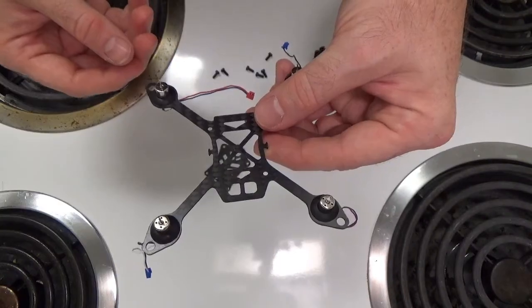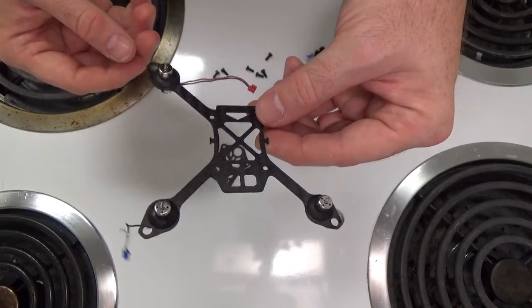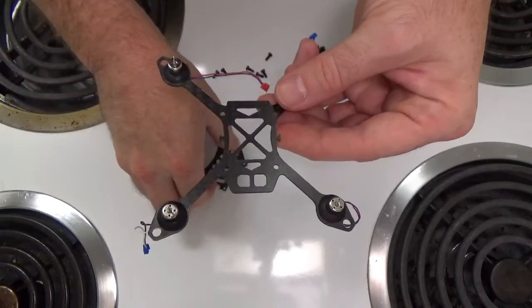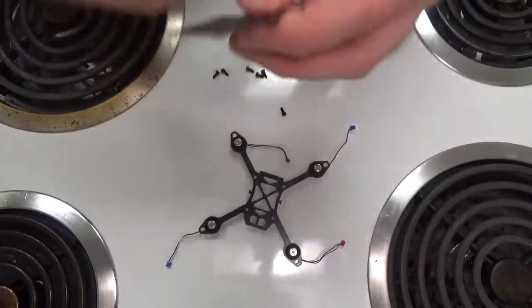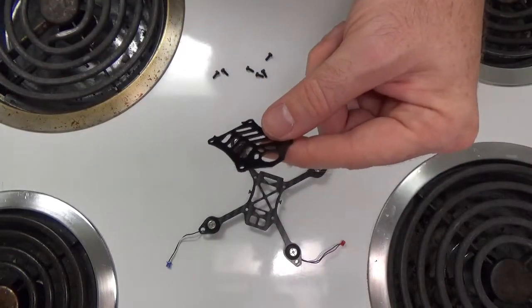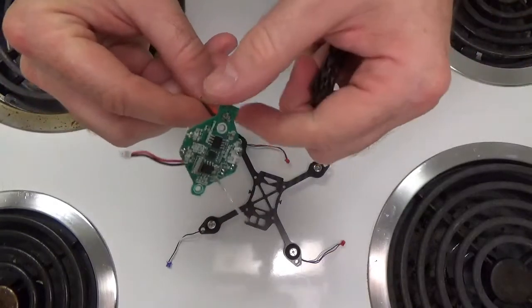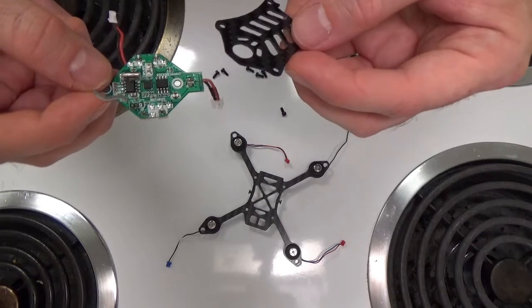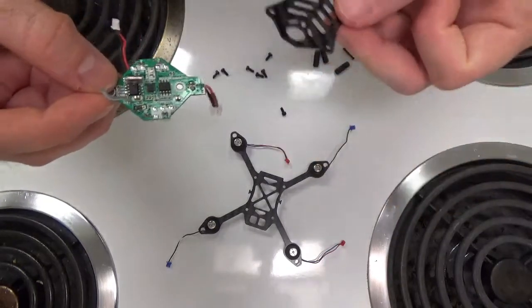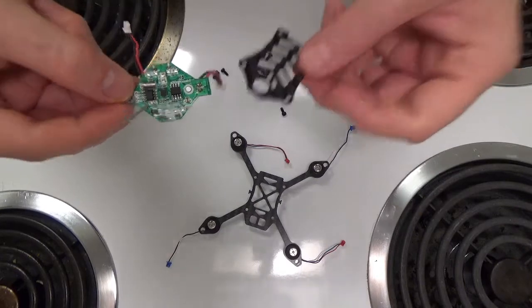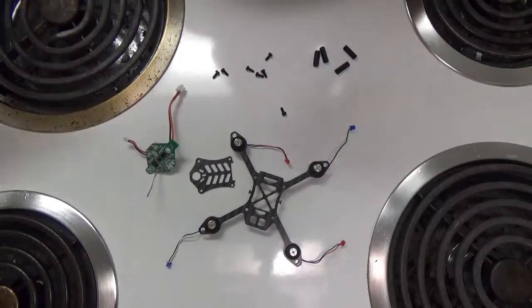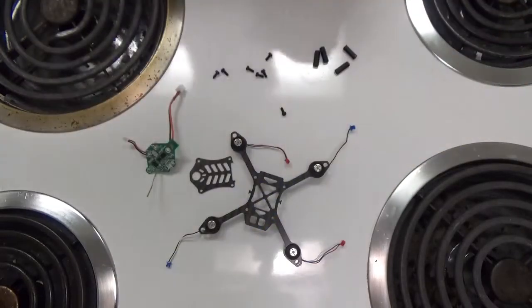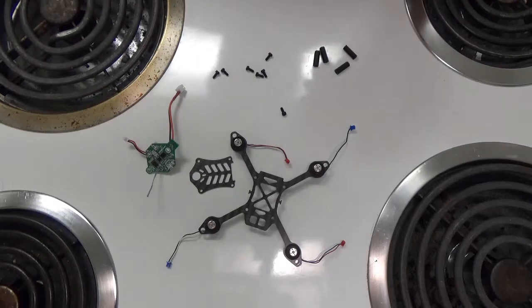With the motors seated in the grommet, take the top plate of the frame and the flight controller that we prepared in the first part. In the first part I said you would need some M2 standoffs, but I've actually discovered a very easy method that is much less of a hassle than using standoffs.